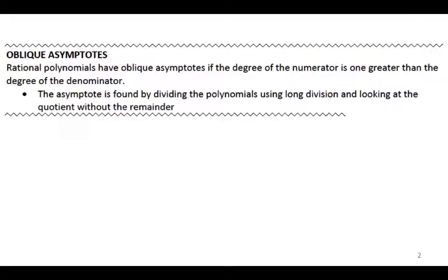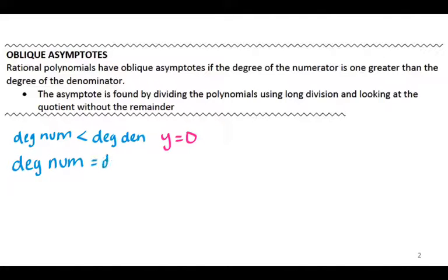Yesterday we were graphing rational functions and looking at horizontal asymptotes. There were 3 scenarios with horizontal asymptotes that all compared the degree. If the degree of the numerator was smaller than the degree of the denominator, then you had the horizontal asymptote y equals 0. If you had the degree of the numerator equals the degree of the denominator, then that was the equation y equals a over b, which was the leading coefficients of your polynomials.